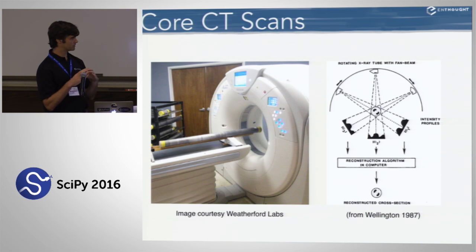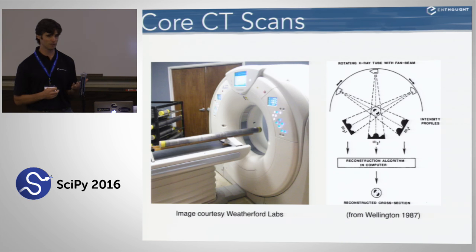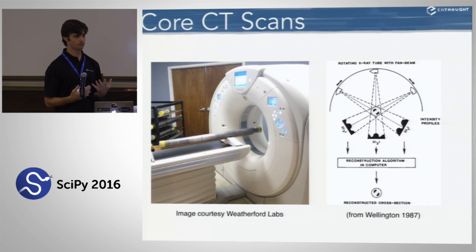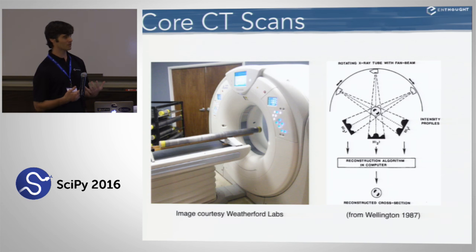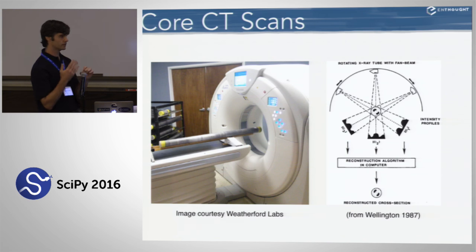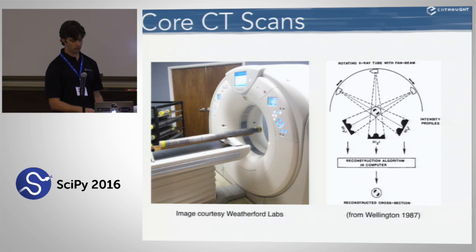The image of the cross-section is measuring the attenuation of the x-rays as they pass through, and that depends dominantly on the density of the material and also on the atomic number. So what you wind up with is a high-resolution image — about 0.3 millimeters per pixel — of the texture and fabric of the sedimentary structure of the rock. As the core is fed through that opening, it takes a succession of cross-sectional images that can then be reconstructed into a three-dimensional volume that represents the core.